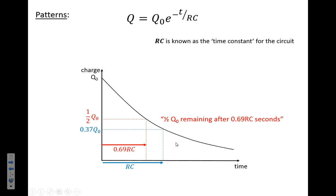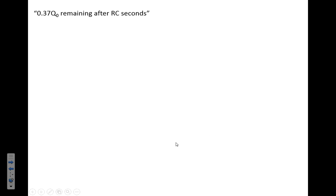So firstly, we've got the 0.37 Q naught remaining after RC seconds. So we're going to start with the original formula, and what we're going to do, we're going to say okay, the time is RC seconds. So what we're going to do, plug this in here. So for T we put RC. This fraction here comes out as one, so this comes out Q equals Q naught E to minus one. If we solve that, that's where we get the number 0.37.